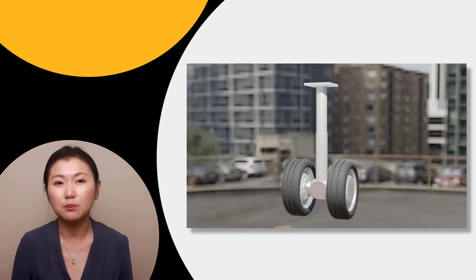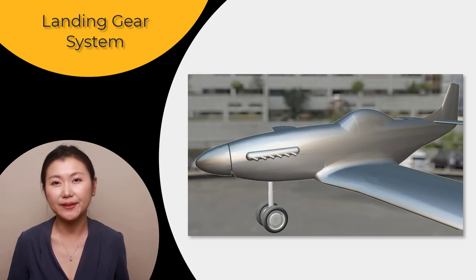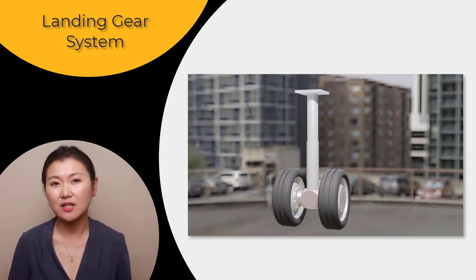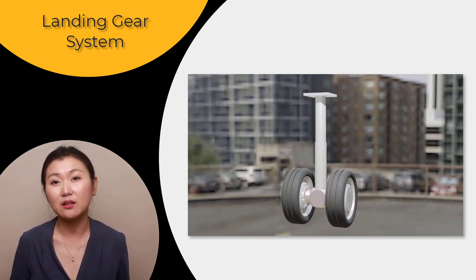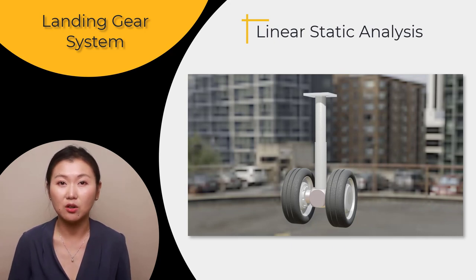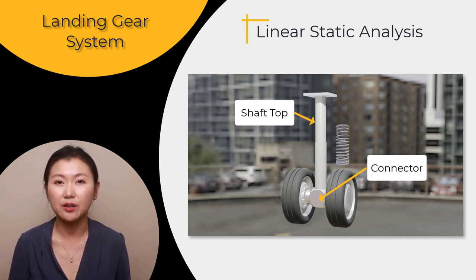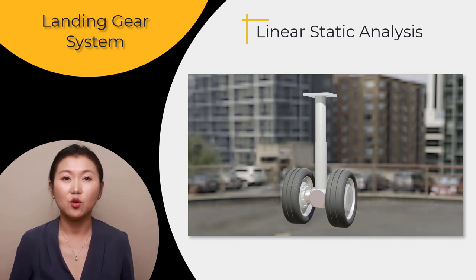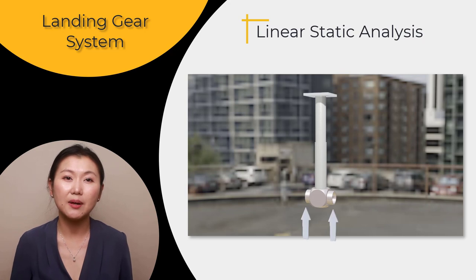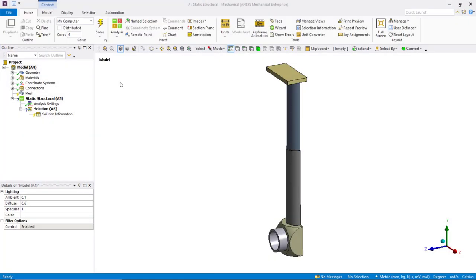Let's use a simple landing gear problem to learn how to define some types of kinematic constraints in a model. The landing gear system is part of a large remote-controlled airplane. We have been given the task of analyzing the landing gear, while another team has designed the main body. We want to conduct a linear static analysis of the landing gear model subjected to a force from the ground, with our analysis interest being the behavior of the shaft. The shaft is composed of two short shafts that can have relative motion along the axis, with a spring between the top shaft and the connector providing stiffness only in the axial direction. Since the model and forces are symmetric, we simulate half of the model.